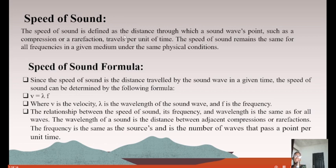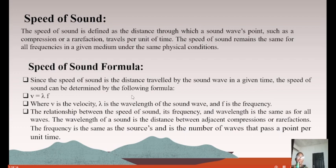The speed of sound is defined as the distance through which a sound wave — such as a compression or rarefaction — travels per unit of time. The speed of sound remains the same for all frequencies in a given medium under the same physical conditions. The formula is V = λf, where λ (lambda) is the wavelength and f is the frequency. The relationship between speed, frequency, and wavelength is the same for all waves.